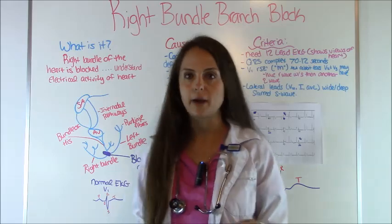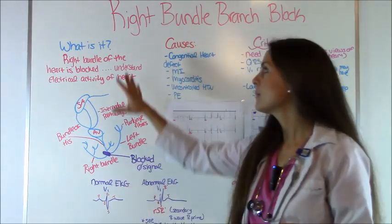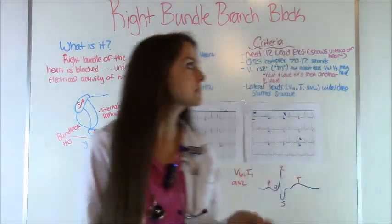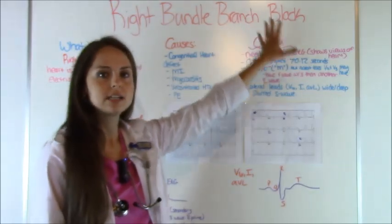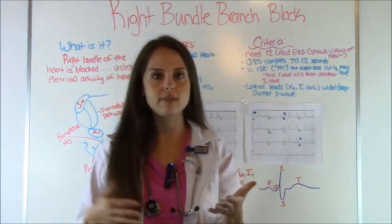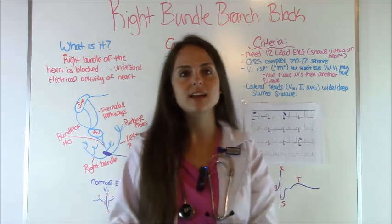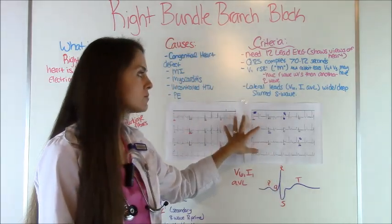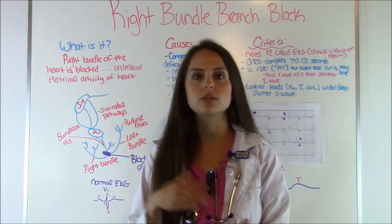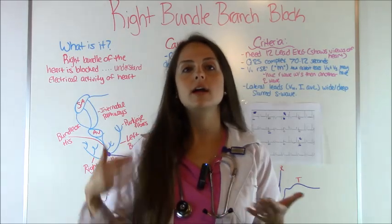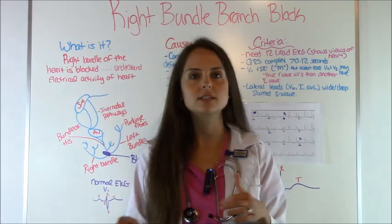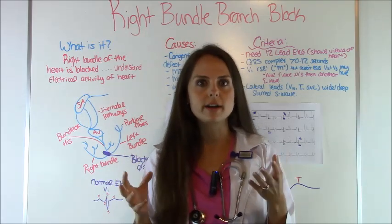This is what I'm going to cover in this video. I'm going to talk about what it is, what causes right bundle branch blocks, and I'm going to show you the criteria of what an EKG would have to look like in order to have a right bundle branch block. Then I'm going to go over actual examples of EKGs that show right bundle branch blocks, show you what the QRS and the S waves look like, and compare them to a normal EKG to give you a better idea of what it looks like.